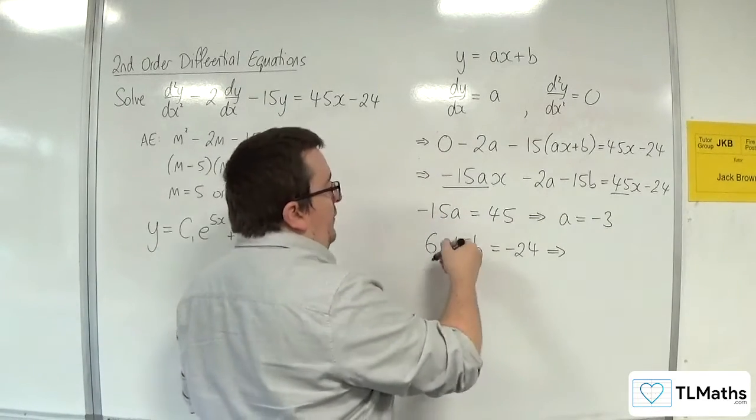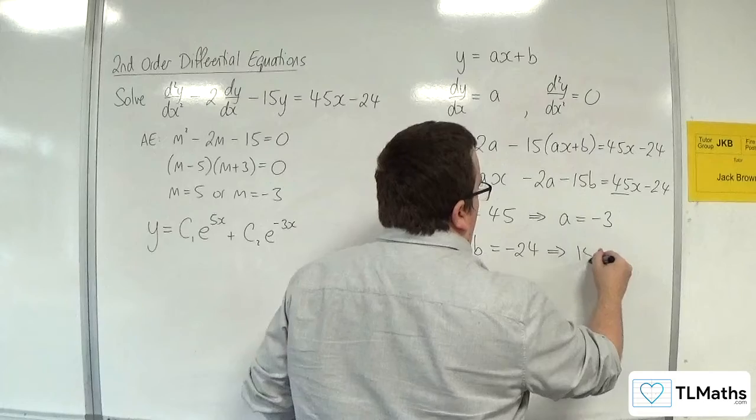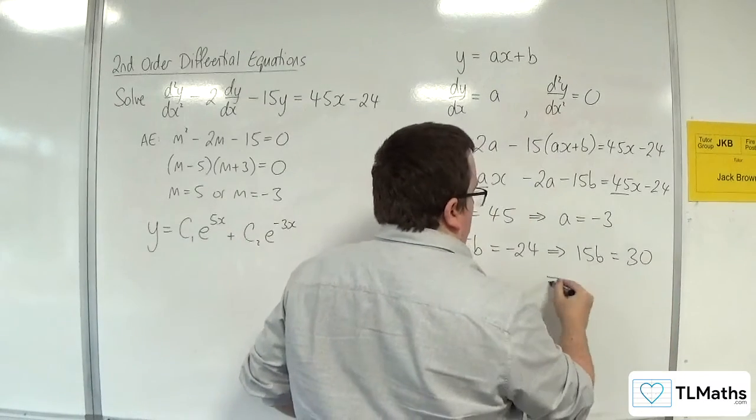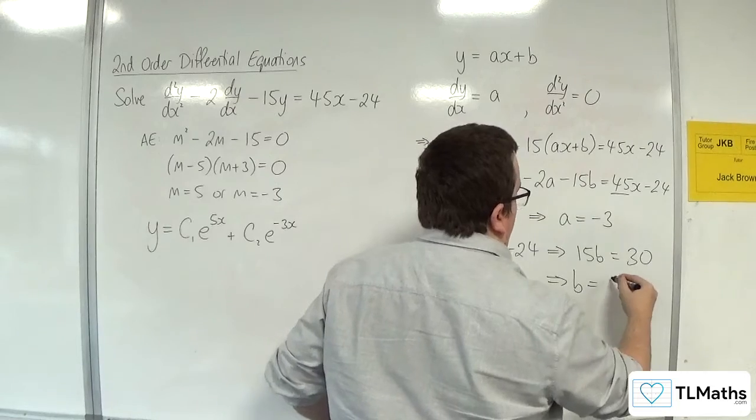So adding 24 to both sides, adding 15b to both sides, 15b is going to have to be equal to 30. So b is going to have to be equal to 2.